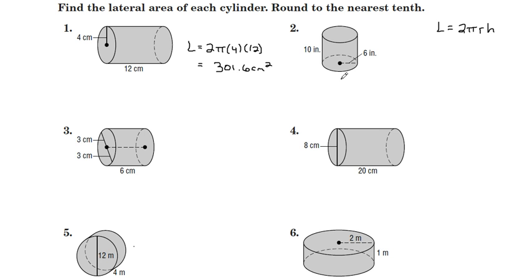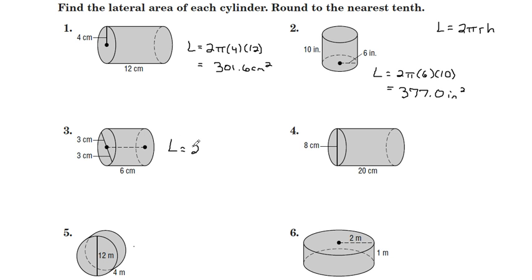Number 2: L equals 2 pi, radius of 6, height of 10, and that gives us 377.0 square inches. Number 3: L equals 2 pi, radius of 3, and a height of 6. The calculator will yield 113.1 square centimeters.